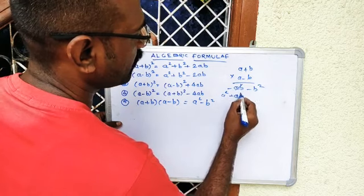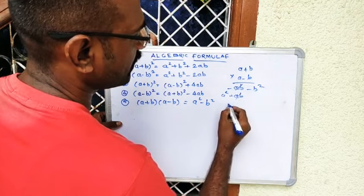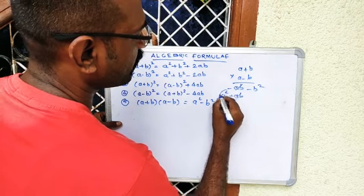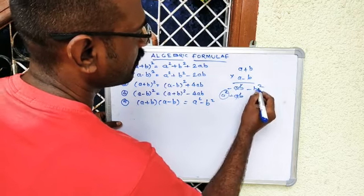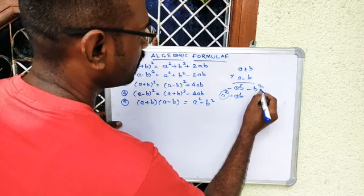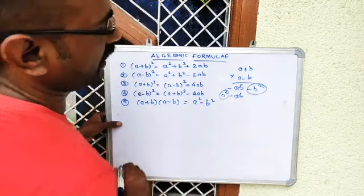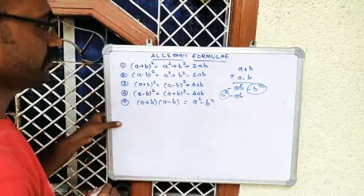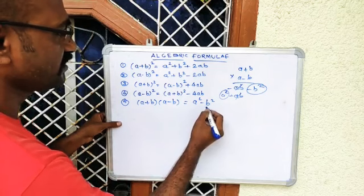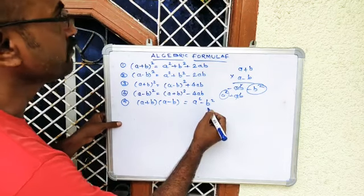The plus and minus ab terms cancel, leaving a² - b². So (a + b)(a - b) = a² - b².